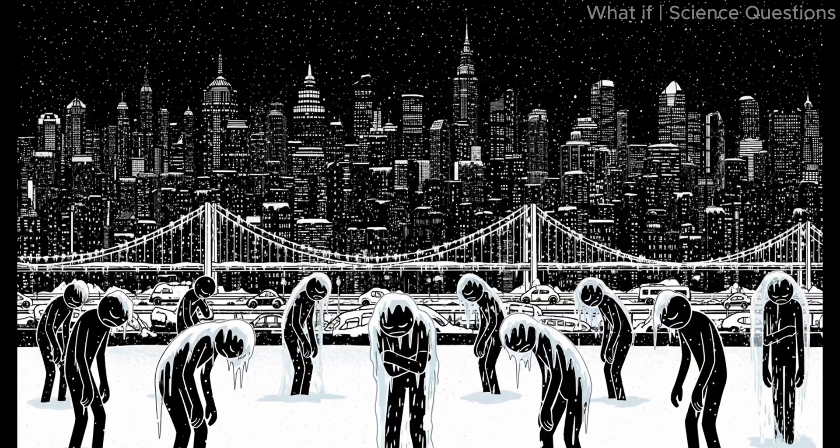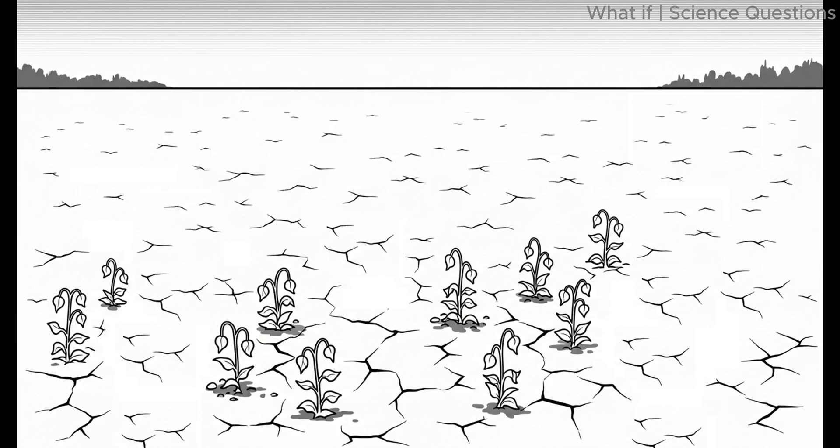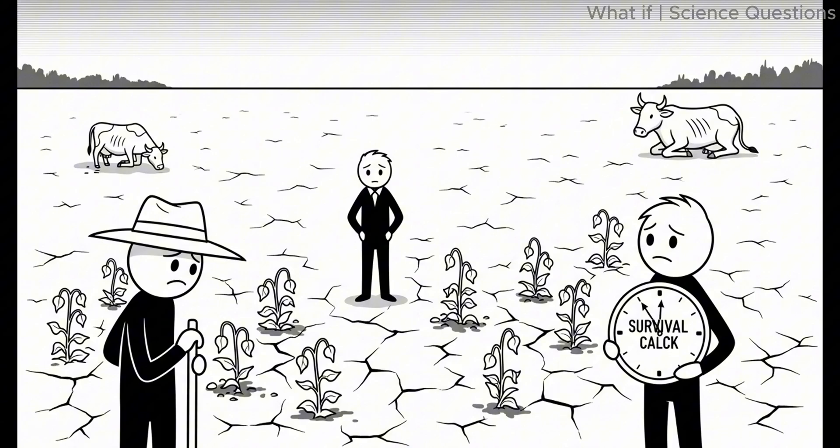Within 24 hours, the average global temperature begins to fall below freezing. Plants that rely on photosynthesis stop producing food. Within days, crops begin to wither. The food chain starts to collapse from the very bottom. Humanity's survival clock has already started ticking.